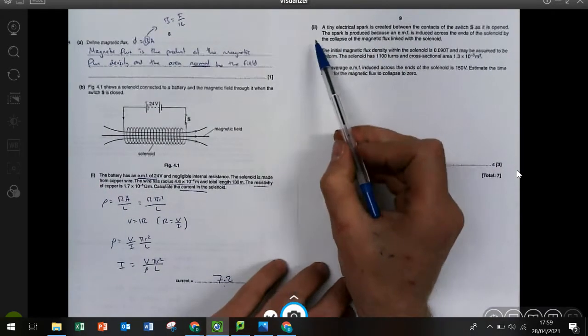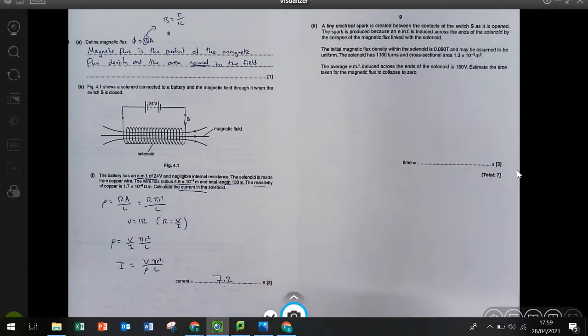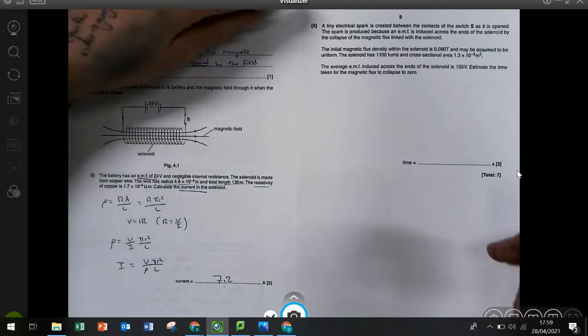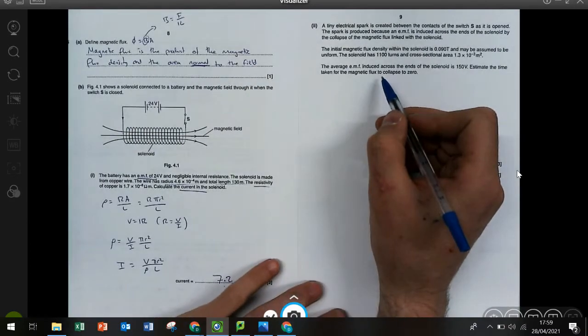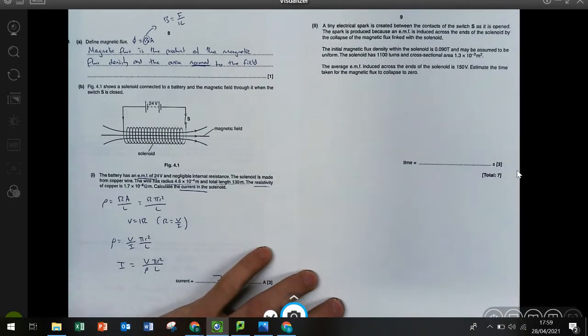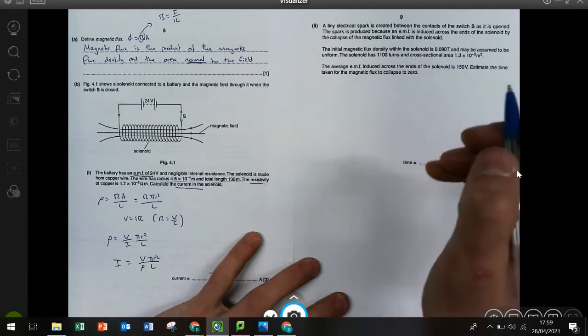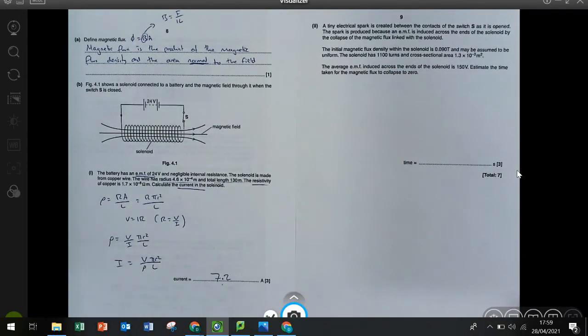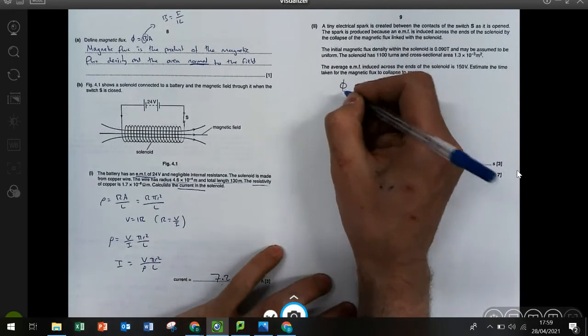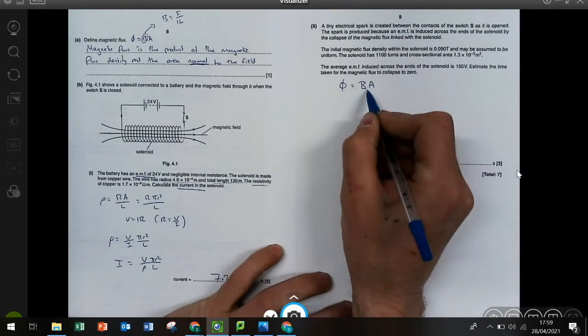So question II, quite a lot of text here. So it does take a little while to figure out exactly what they want. They want the time taken for the magnetic flux to collapse to zero. So we really need to know what the magnetic flux is, and then we need to know how it's going to change.